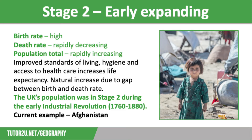LICs are in Stage 2 of the DTM. Even the world's poorest countries have experienced a fall in death rate due to global efforts to tackle hunger and disease. Afghanistan is one of the poorest and least developed countries in the world. Its birth rate is 39 per 1,000 and its death rate is 14 per 1,000, which has dropped hugely over the last decade. About 80% of the population are farmers who need children to support them in the fields and tending livestock, which is why the birth rate is high. The UK's population was in Stage 2 during the early Industrial Revolution between 1760 and 1880.